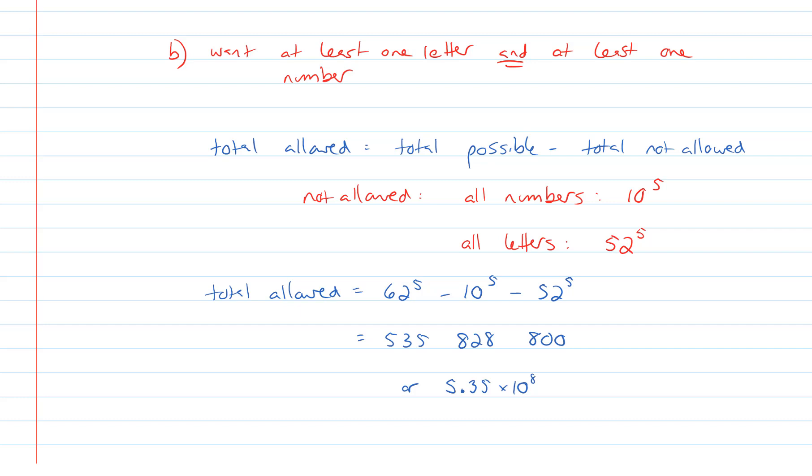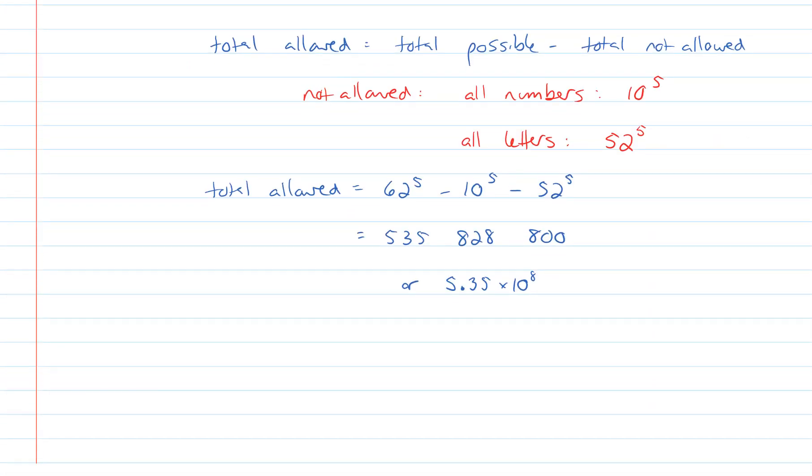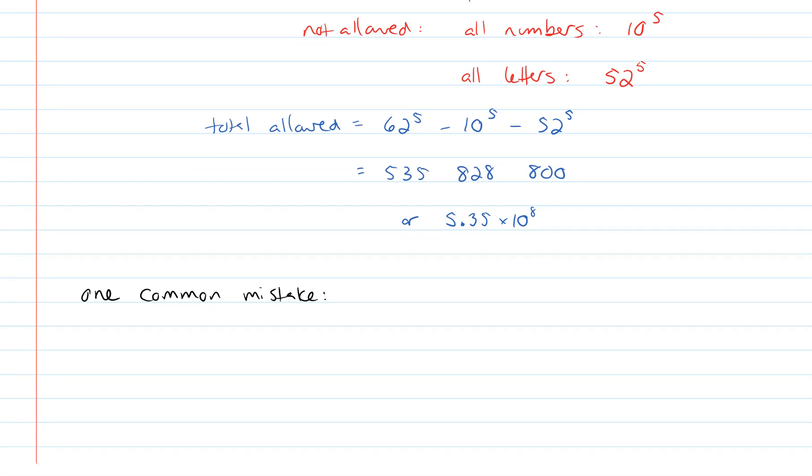Now one common mistake that you don't want to do is to do something like the following. So one common mistake is to say something like, okay, well, if we need to have at least one number and at least one letter, then let's just declare that we're going to put a letter in the first slot and a number in the second, and then free up everything else.